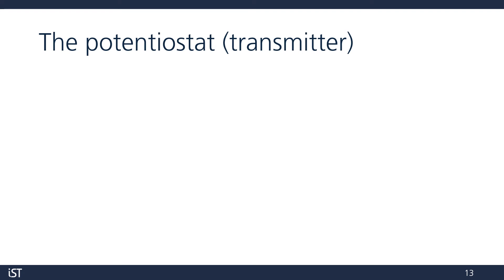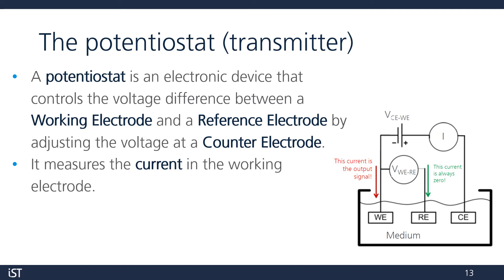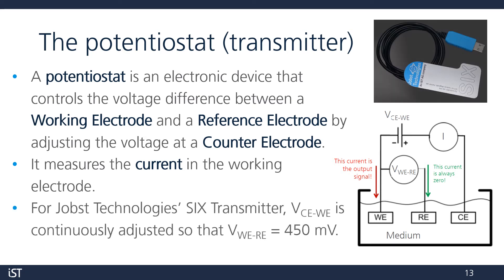But how do we measure this very small current and convert it into an analyte concentration? For this, we use a potentiostat device. This controls the potential difference between a working and reference electrode by adjusting the voltage at a counter electrode. The device measures the current in the working electrode. For the 6 transmitter from YOLPS Technologies, pictured in the corner, the potential across the counter and working electrode is continuously adjusted so our potential at the working and reference electrode is the predefined 450 millivolts.